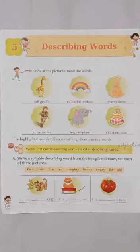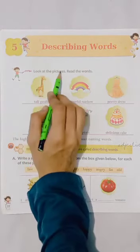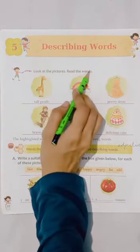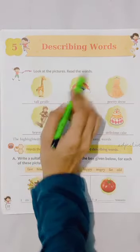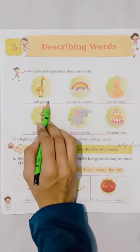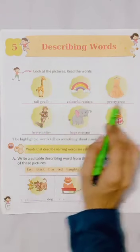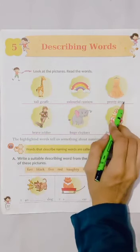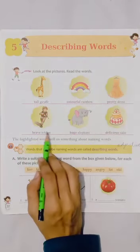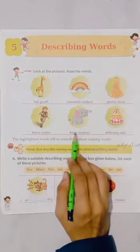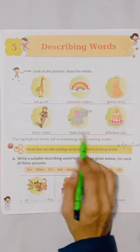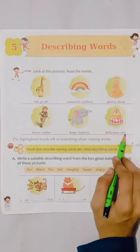Let's start the chapter now. Look at the pictures and read the words: tall giraffe, colorful rainbow, pretty dress, brave soldier, huge elephant, delicious cake.